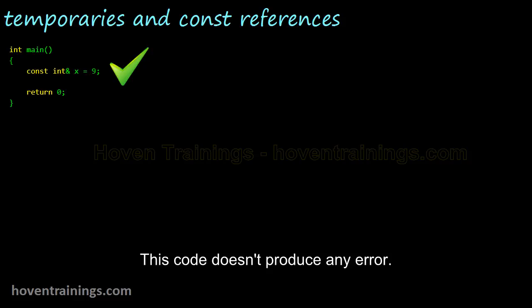This code doesn't produce any error. 9 is a literal constant and x is a constant reference to it. This code has no logical error; it cannot lead to any anomaly.